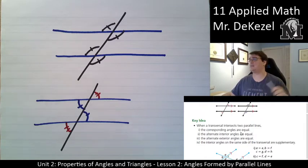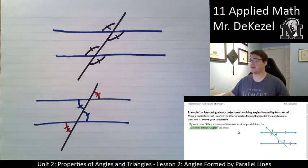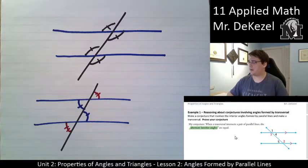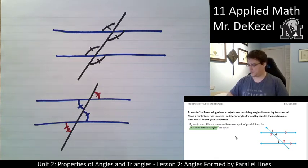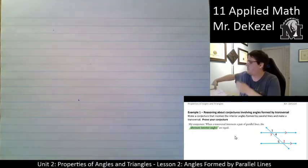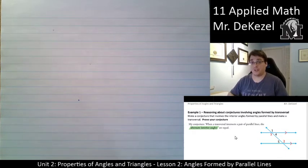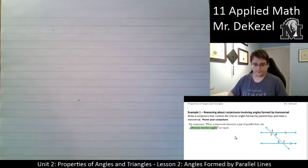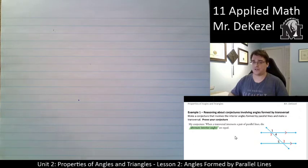Definitely check out these key ideas and the important points. Example one: reasoning about conjectures involving angles formed by a transversal. We're going to make a conjecture that involves the given angles 1, 2, 3, 4, 5, and we are going to prove it. This is going to prove that angle 2 and angle 3 are the same — those would be interior alternate angles. The conjecture: when a transversal intersects a pair of parallel lines, the interior angles are equal.